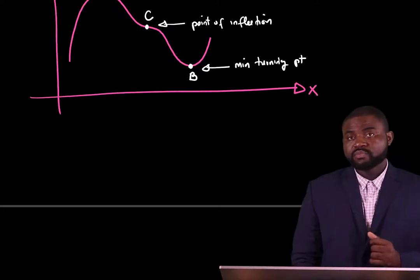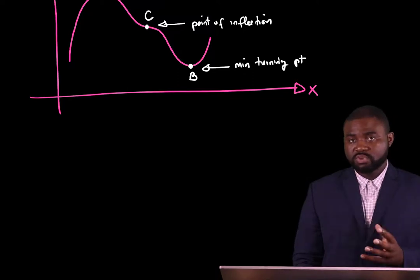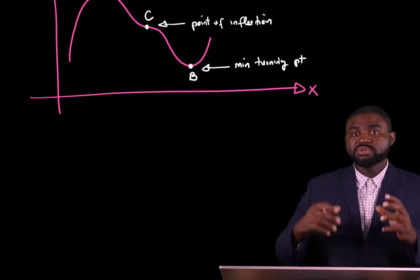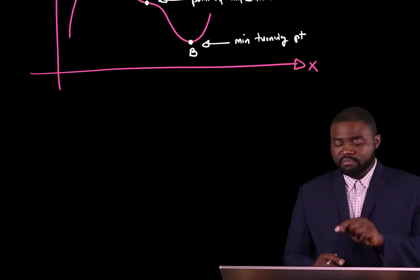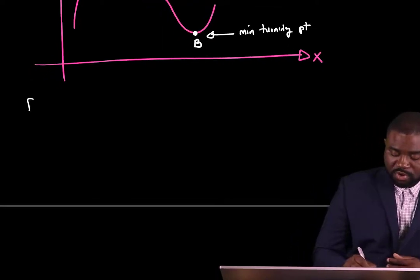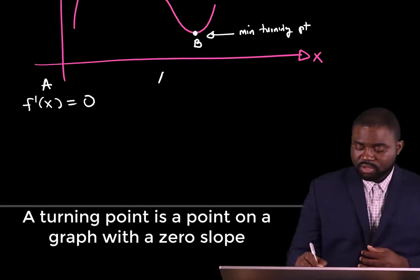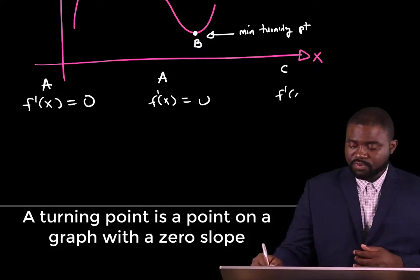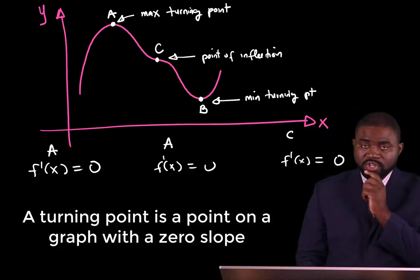In physics, turning points play an important role. Therefore, identifying turning points is important. Differentiation offers us a very simple technique that helps us identify turning points of a given function. One thing we know is that at A, B, and C, the slope of the graph is 0.